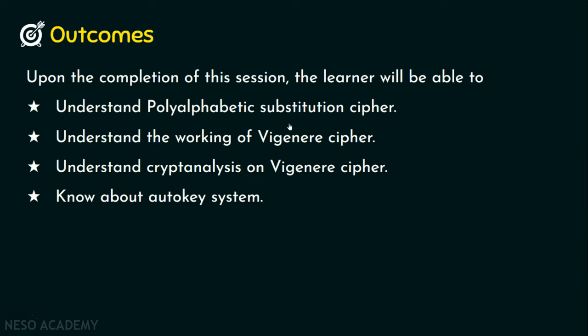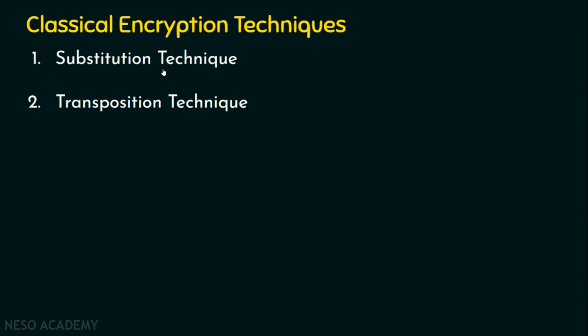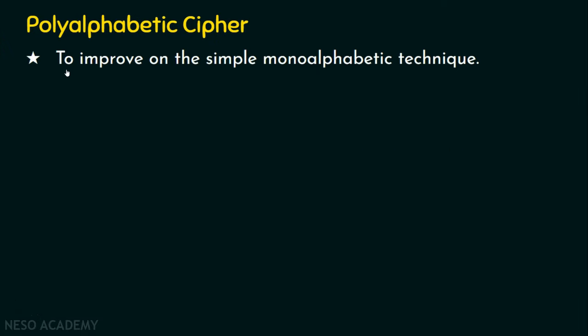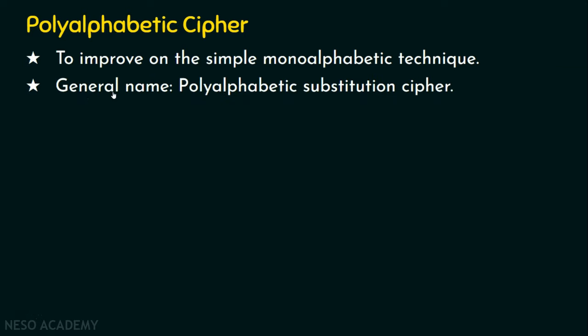Before stepping into polyalphabetic substitution, let's revisit the classical encryption techniques: the substitution technique and the transposition technique. We are in the substitution technique. This polyalphabetic cipher was introduced to improve on the simple monoalphabetic technique. In monoalphabetic substitution, if plaintext letter A is mapped to Z, then in all occurrences of A, Z will be the ciphertext — making it vulnerable to attacks. To improve on that, the polyalphabetic ciphering technique was introduced.